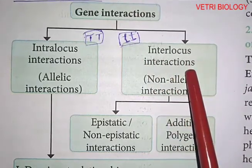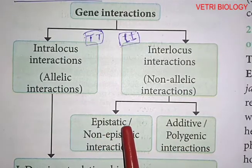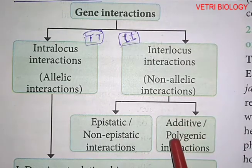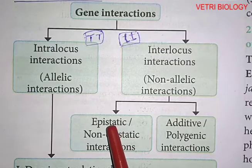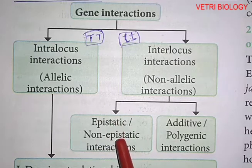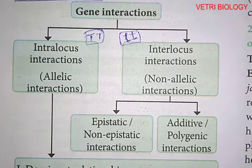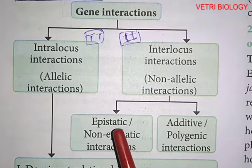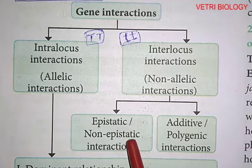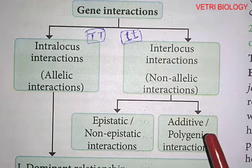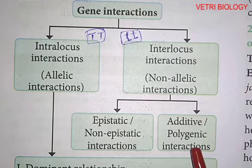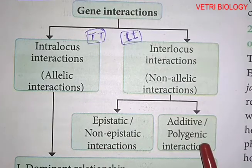Interlocus interaction is of two types: epistatic and non-epistatic interactions, and additive and polygenic interactions. In epistatic interaction, one gene masks or suppresses the expression of another gene. The masking gene is called epistatic and the masked gene is non-epistatic. In additive interaction, two genes together express one character. In polygenic interaction, two or more genes together express one character.